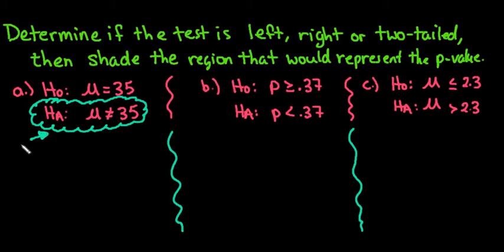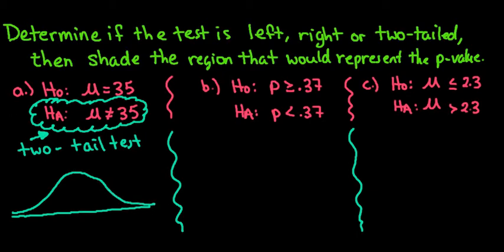Since this one is not equal to, not equal always means a two-tailed test. That means if I draw out my curve, my normal curve or t-curve depending on which test I'm running, I'm going to shade both tails. It's called a two-tailed test because I shade both tails.